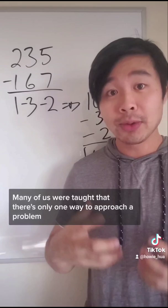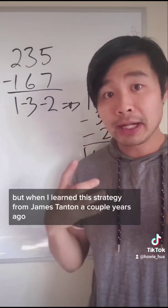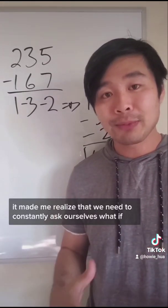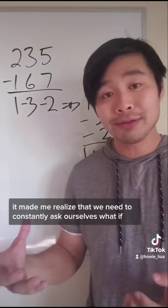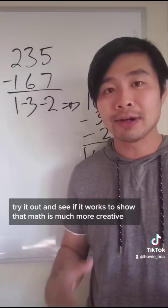Many of us were taught that there's only one way to approach a problem. For example, we can only subtract right to left. But when I learned this strategy from James Tanton a couple of years ago, it made me realize that we need to constantly ask ourselves what if, try it out, and see if it works to show that math is much more creative than what we were taught.